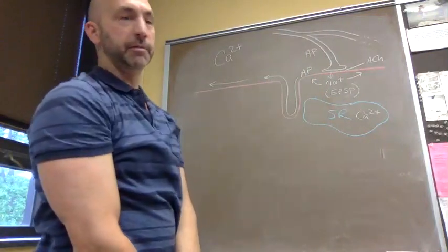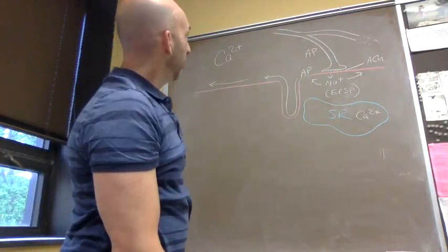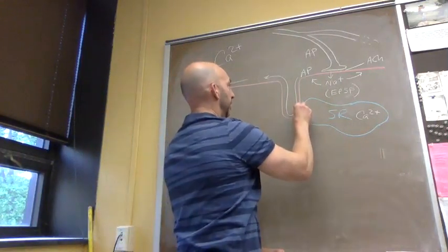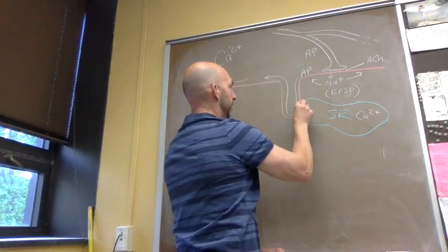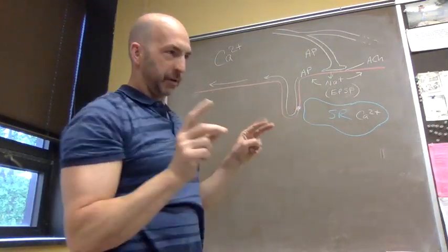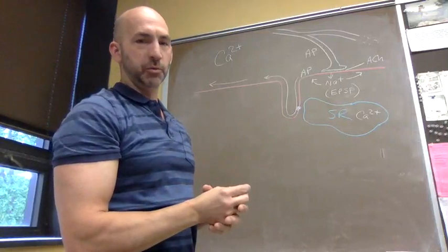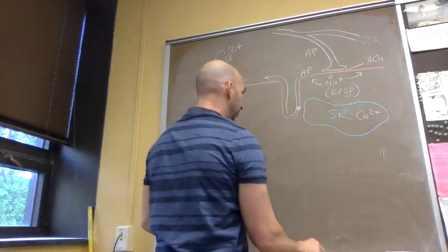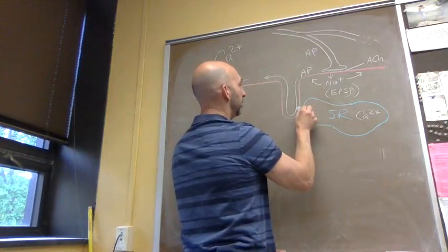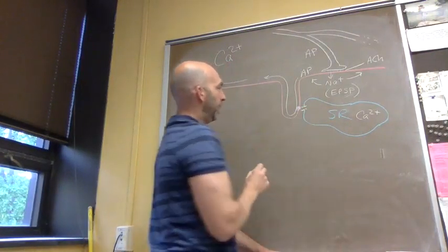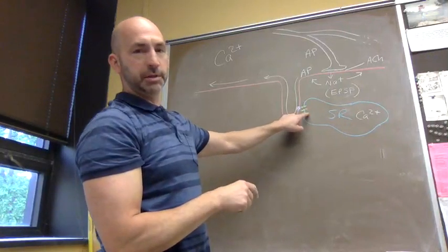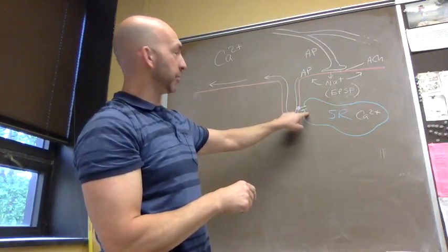We have a voltage sensor—you don't need to know the terms here, but that's the dihydropyridine receptor, the voltage sensor in the T-tubules. It is linked to the channel in the SR membrane, which is the ryanodine receptor. Again, don't need to know that terminology.